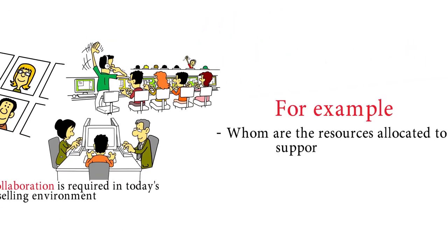For example, whom are the resources allocated to support this rollout? Who has veto power? Whom do sellers have access to?